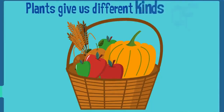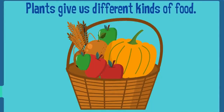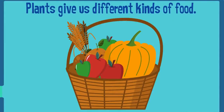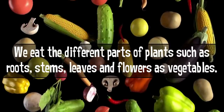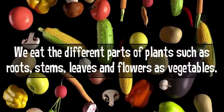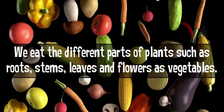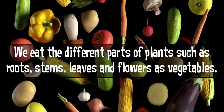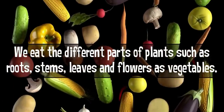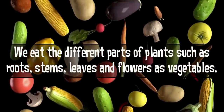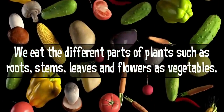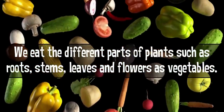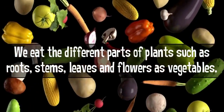Plants give us different kinds of food. We eat the different parts of plants such as roots, stems, leaves and flowers as vegetables.